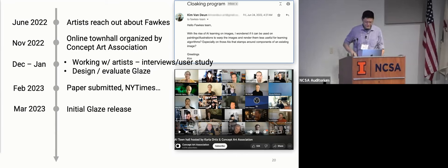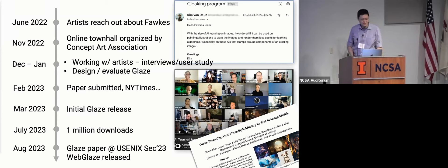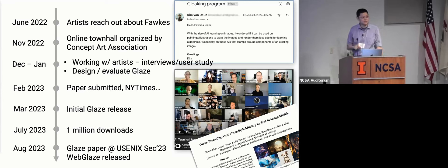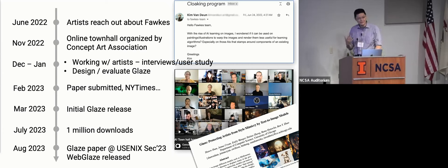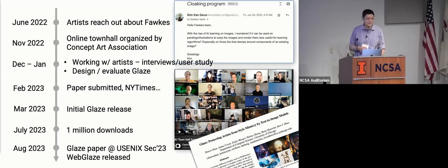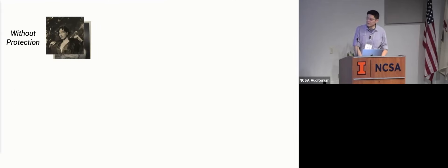By March we built the first version of what became known as Glaze, with a software release. By July we had a million downloads. By August we presented at USENIX Security, won the Internet Defense Prize and a paper award. We also released a free web service, because we realized most artists don't have GPUs — many don't even have desktop computers — so we ran the computation on our GPU servers for free.